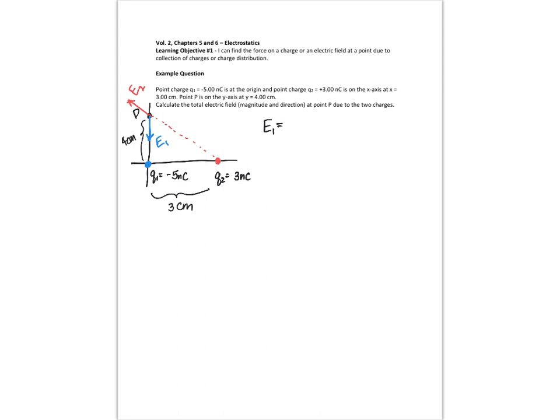So E1 is going to be k q1 over r1 squared. I'm just going to use 9 times 10 to the 9th. The charge q1, this is also like the force problems where we're just going to use the magnitude of the charge. I already used the sign of the charge to draw the vector, so I only need to know how big it is now.